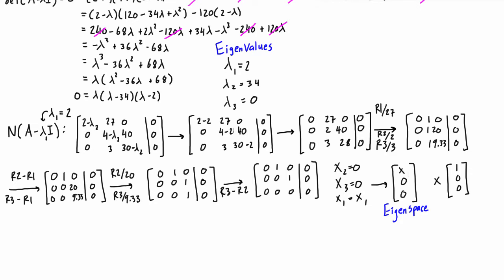We can pull out the x and rewrite what we have left as 1, 0, 0. This vector is a basis for our eigenspace and it's also an eigenvector belonging to λ₁. Any multiple of [1, 0, 0] is an eigenvector belonging to λ₁, but if the question is asking just for one example, you can just write one single example.